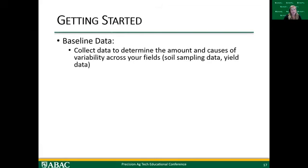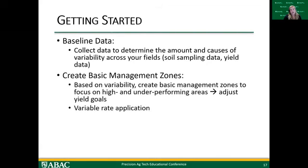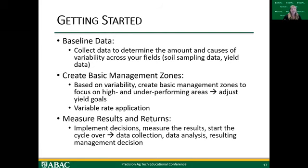Once we have that baseline data, we can create basic management zones, really focusing on our high-performing areas and our underperforming areas. Why are my high-performing areas so good? Why are my underperforming areas not producing well? From there, we can adjust yield goals and have variable yield goals throughout my field, leading us into variable rate application. Then, sticking with our data cycle, we want to measure our results and returns — implement decisions based on management zones and baseline data, measure the results, and start that cycle over again.